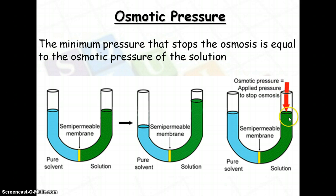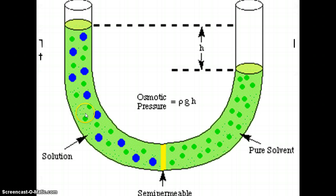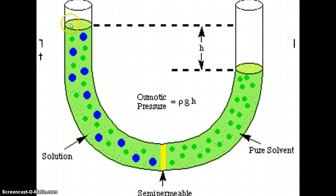The pressure that you exert down that stops the movement of water is the osmotic pressure — the pressure the solution is exerting to try to equalize. When you add more solute particles, you see a higher osmotic pressure because there are more of them on one side, so water wants to move that way more. The more solute you add, the more pressure you have to apply to equalize it out. And that's osmotic pressure.